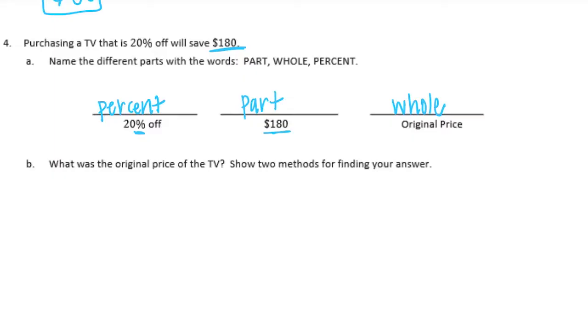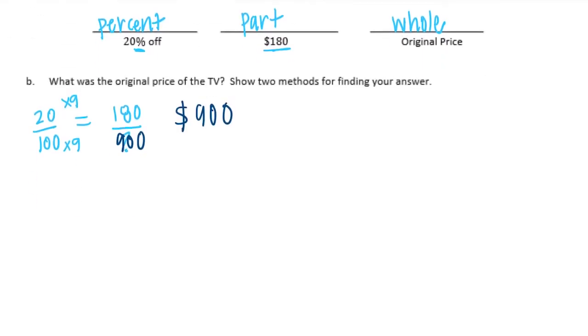Okay, so we know that 20% off saves $180. So 20 out of 100, 20% is equal to 180 out of something. We don't know yet. But we can multiply. So I don't even need to do any reducing of 20 one hundredths, because 20 times 9 is equal to 180. So I just need to multiply 100 times 9 and I'll get 900. So the original price was $900.